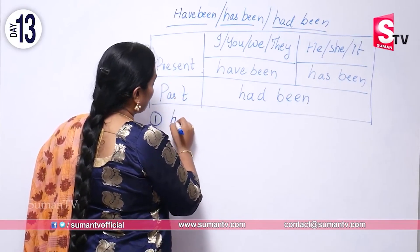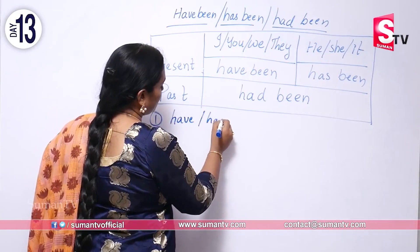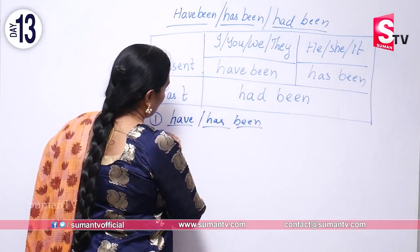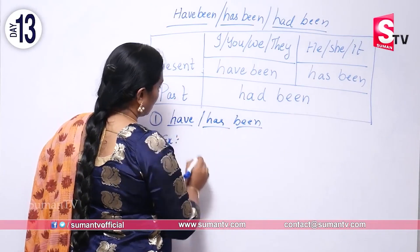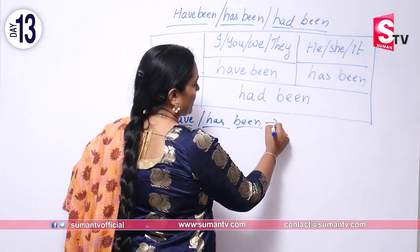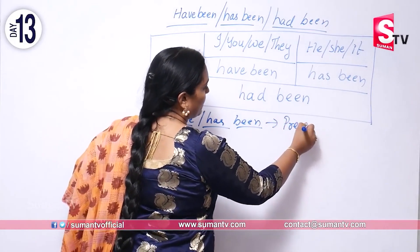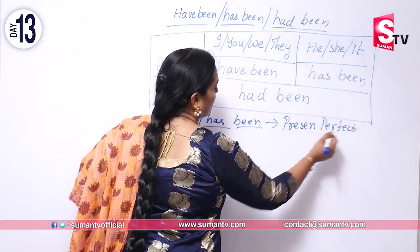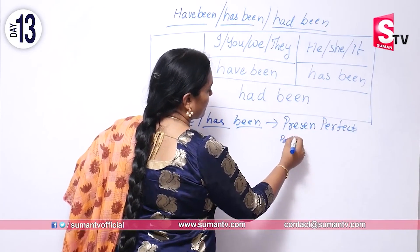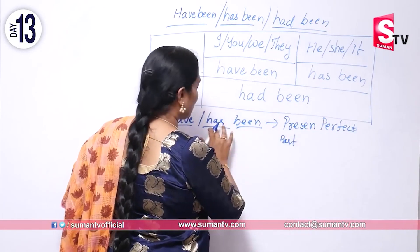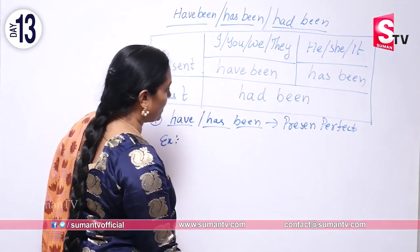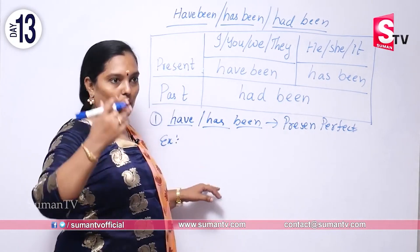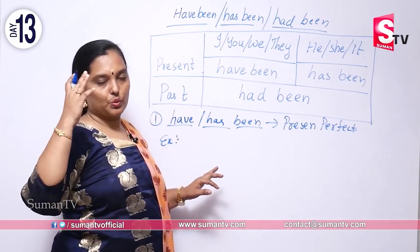'Have been' and 'has been' are used in the present perfect tense. 'Had been' is used in the past perfect tense.